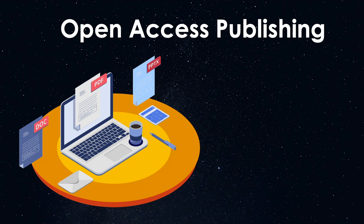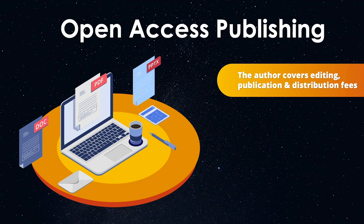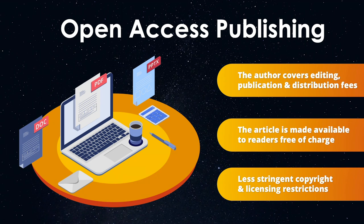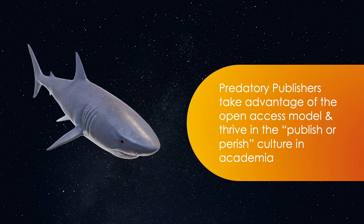One of these new models was open access publishing, which is very similar to traditional publishing, except that instead of journal subscriptions covering editing, publication, and distribution costs, the author covers them, and the published article is made available to readers at no charge. Furthermore, the articles published under this model experience less stringent copyright and licensing restrictions. Unfortunately, predatory publishers have emerged, which take advantage of these publishing models, especially the open access model, and thrive in the publish or perish culture in academia.